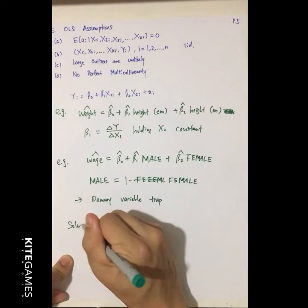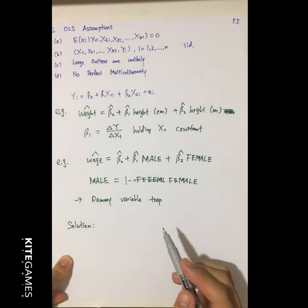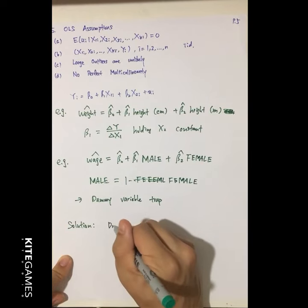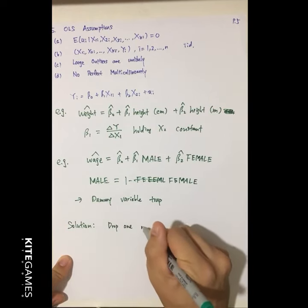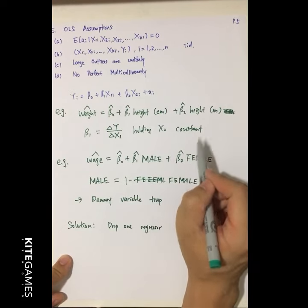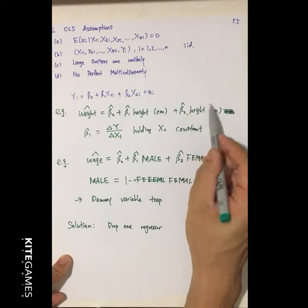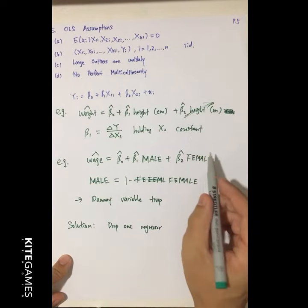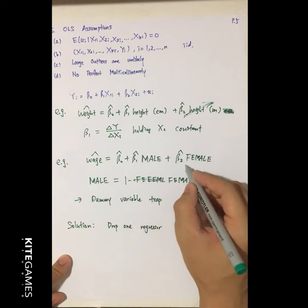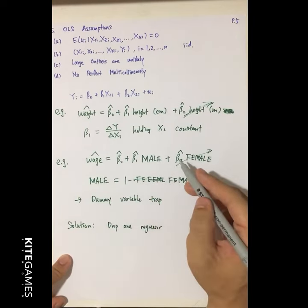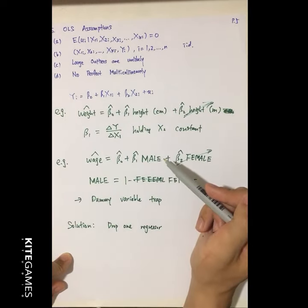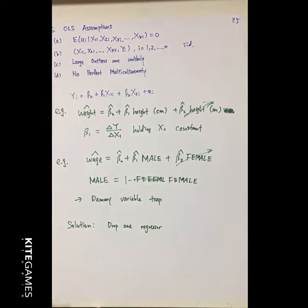What are the solutions to perfect multicollinearity? We can drop one regressor. You should drop any one regressor from the equation — either one is fine. In the second example, you can drop either the Female variable or the Male variable. Dropping either one ensures there is no perfect multicollinearity in the equation.